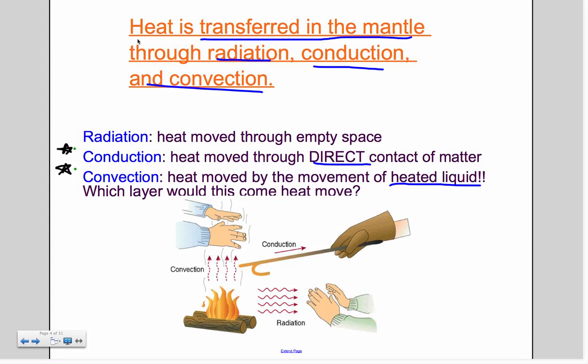Convection is when the heat is moved through heated liquid, and it doesn't have to be like liquid, like how we would think, like states of matter liquid. It can actually be like heated air molecules or water molecules and do a convection in the atmosphere. It just has to have some kind of fluid type material it can move through.